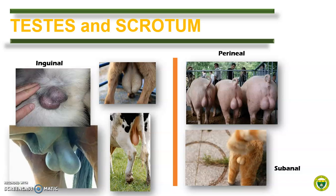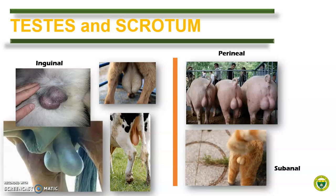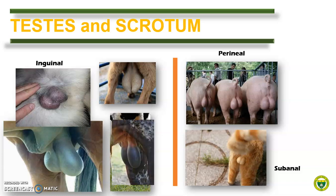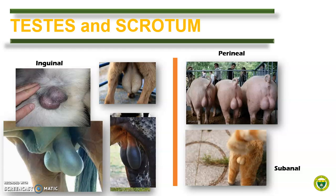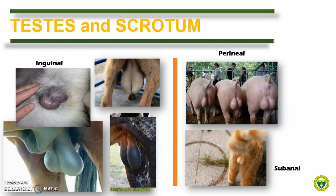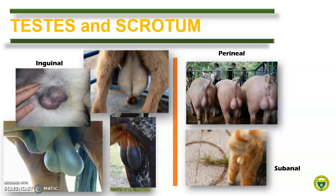In stallion, the skin of the scrotum is thin with few fine hairs and mostly pigmented. It is shiny and oily because of the secretions of the sebaceous and sweat glands. In bulls, the scrotum is long and pendulous and divided into left and right halves by a septum. Note the sparse hair in large ruminants, which is in contrast with small ruminants that have a very hairy scrotum.